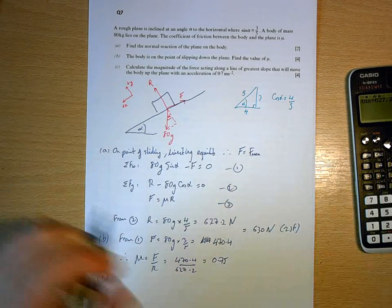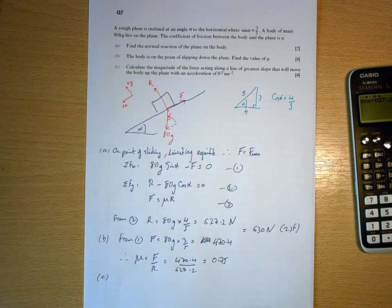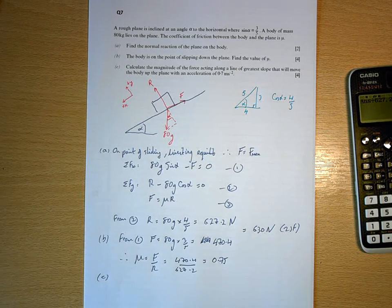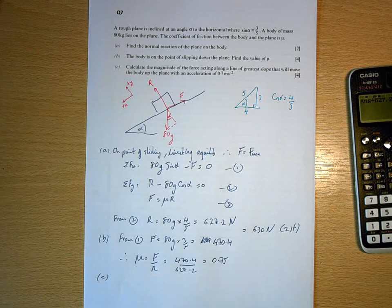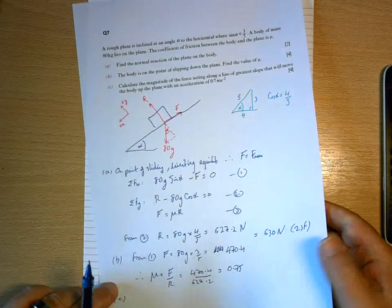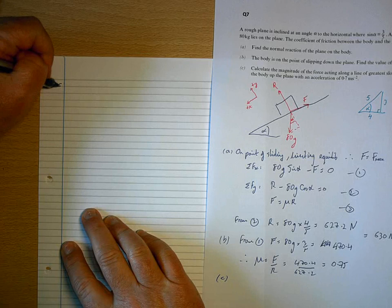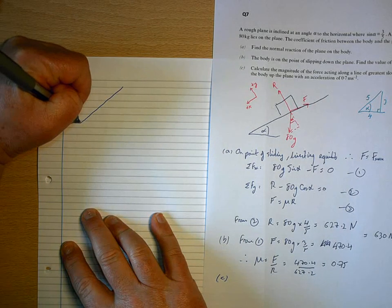Part c: calculate the magnitude of the force acting along the line of greatest slope that will move the body up the plane with an acceleration of 0.7 meters per second squared. We want a new page for c then. The diagram changes slightly.